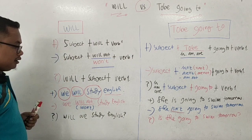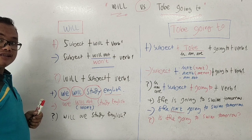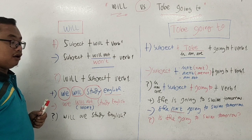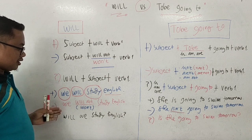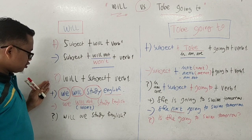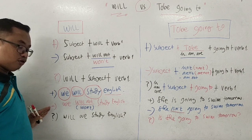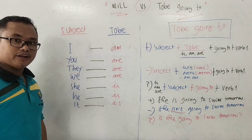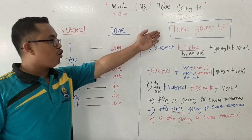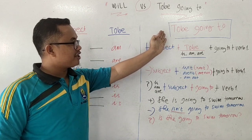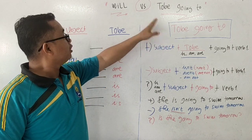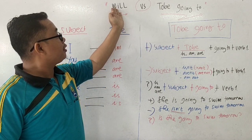Now you have to make your own examples in the comment section — positive, negative, and interrogative. Okay, now let's continue our learning with 'to be going to,' which has the same meaning as 'will.'